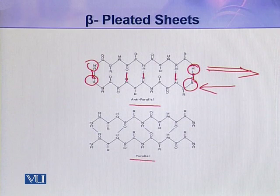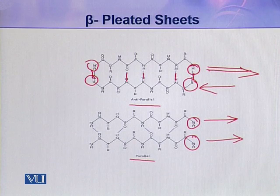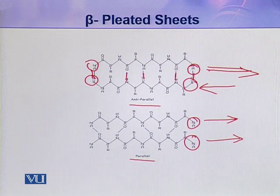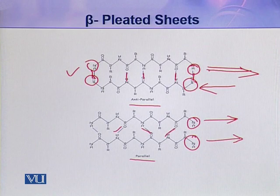In a parallel beta pleated sheet, the amino groups on both chains are on the same side, meaning the chains run in the same direction. Notice the difference in hydrogen bonding: the hydrogen bonds are comparatively straight in anti-parallel beta pleated sheets, while they are slightly distorted in parallel beta pleated sheets. That is why anti-parallel beta sheets are more stable compared to parallel beta pleated sheets.